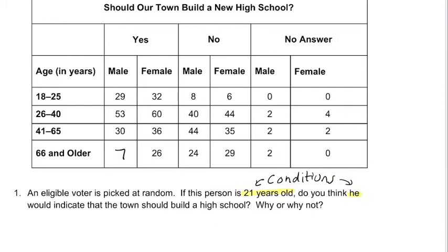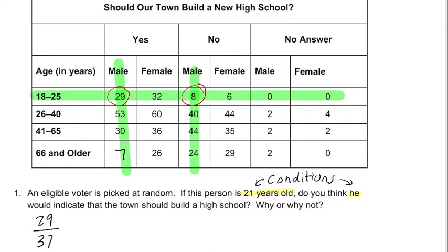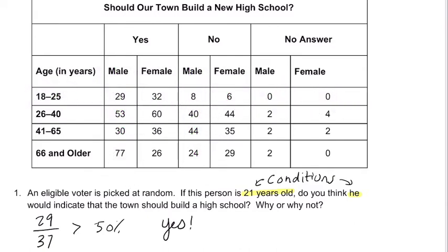In conditional probabilities on tables, you start to look at certain rows — in this case this one — and columns, in this case these two right here. What we see is that we're really dealing with a population of these 37 males who are both male and in that age group. So that gives us a total population of 37. Out of that population, 29 males said yes, they would vote to build a new high school. I would say yes, because it's greater than 50%. So the goal is to use these conditions to isolate what numbers we're looking at.